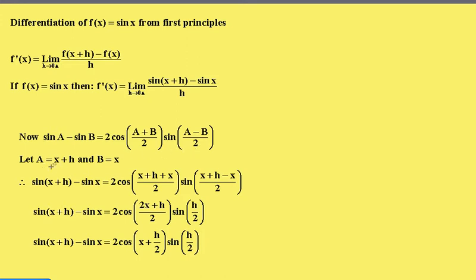So here I'm going to let a equal x plus h and b equals x. So we have sine of x plus h minus the sine of x, which is the numerator here. And that's how we're going to simplify this.